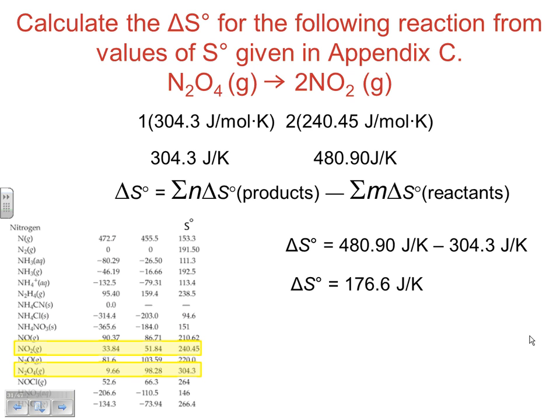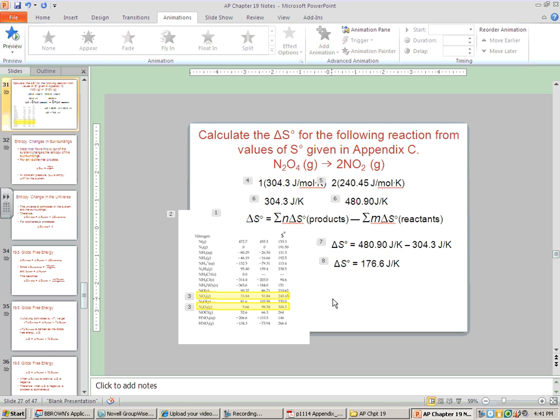We end up with a delta S of positive 176.6 joule kelvins. The moles disappeared when we multiplied by the mole amounts in each case. The final answer ended up positive, which makes sense. If you increase the number of moles of gas, that should increase the amount of entropy in the system. That ends our third set of notes over chapter 19.